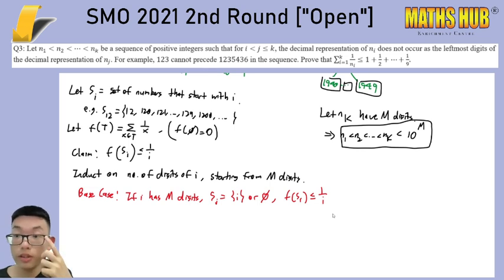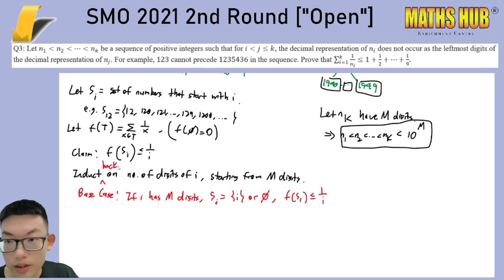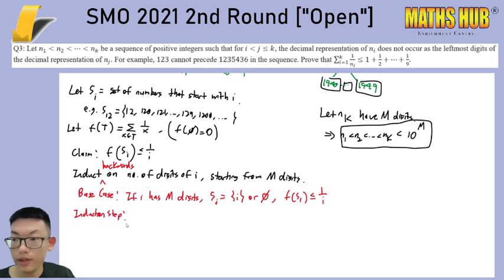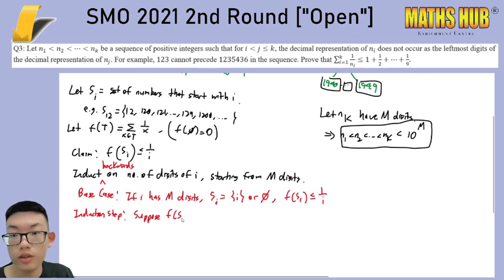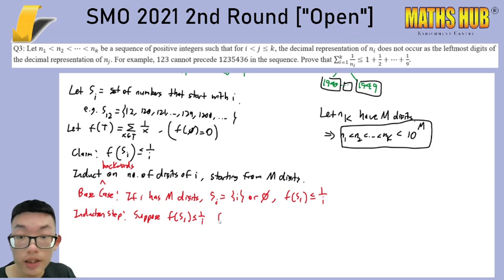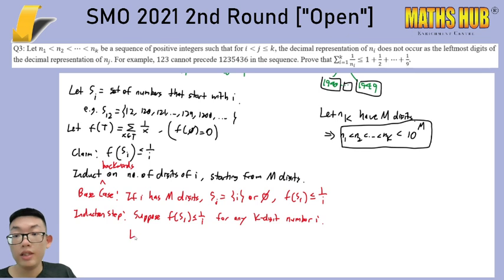The base case is simple. If i has m digits, then the only m-digit number that starts with i is i itself. So your set can either be just i itself or the empty set. The maximum of f of the set is just 1/i. So the base case is trivial. Now we will show the induction step going backwards.